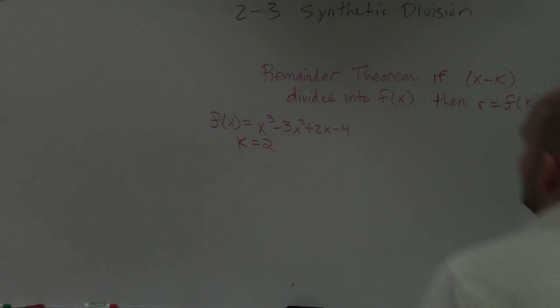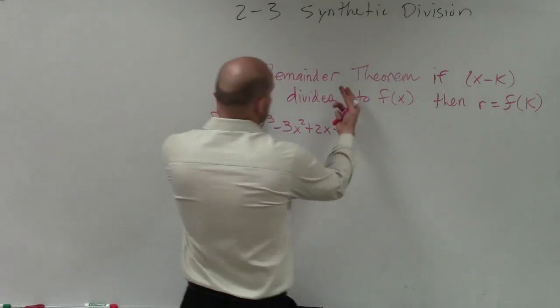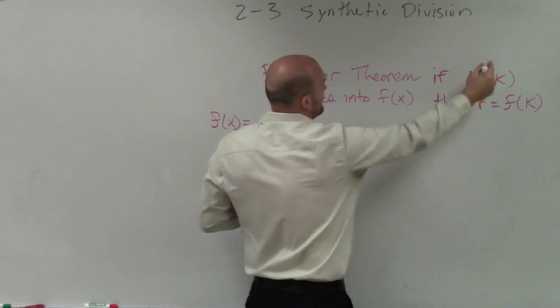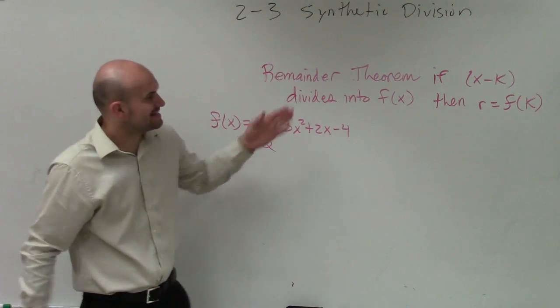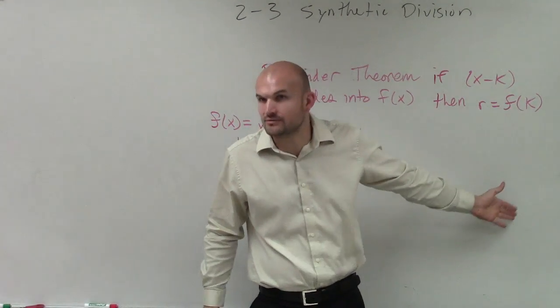So when we look at this, we have our remainder theorem, and what the remainder theorem says is if x minus k divides evenly into f of x, then r equals f of k, right?